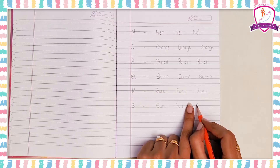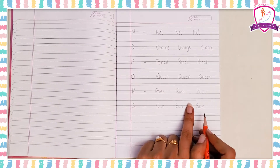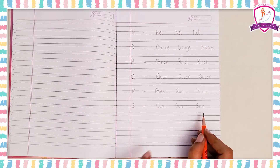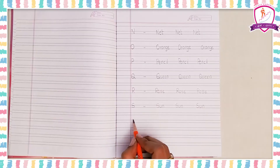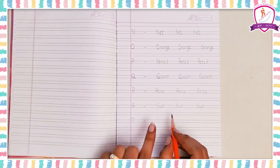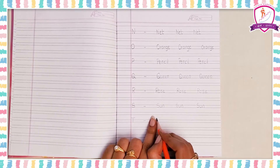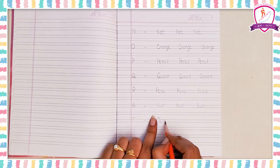R, S. Finger gap — S for sun. S, U, N — sun. Finger gap S, U, N — sun. Again, finger gap S, U, N — sun. S of term.